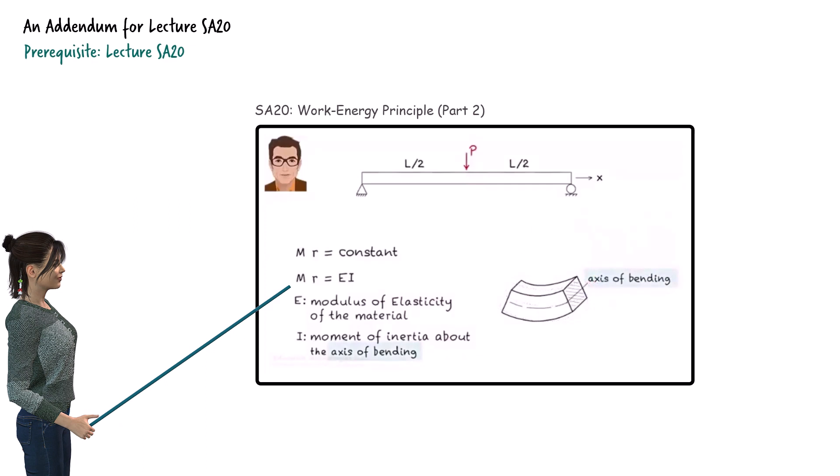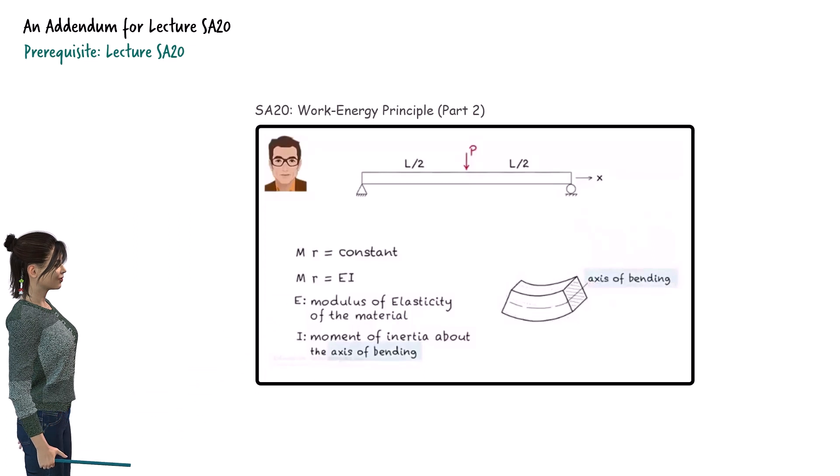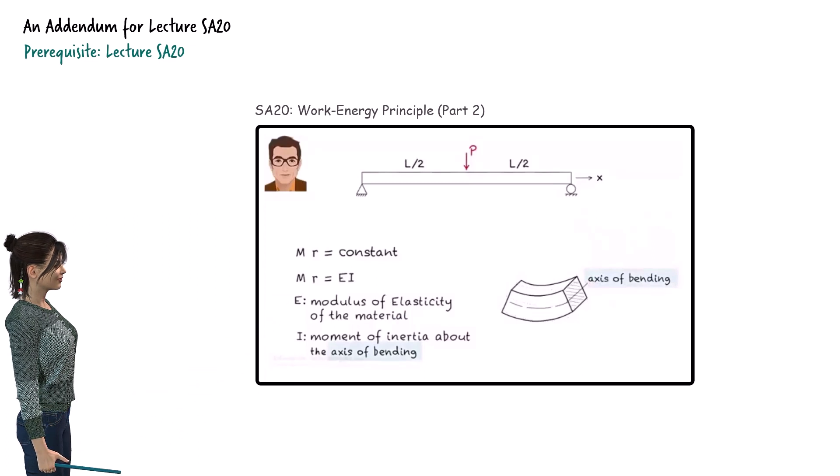This equation states that the product of the bending moment in the beam and its radius of curvature equals the modulus of elasticity of the material times the beam's moment of inertia. In that lecture, the equation was presented without a derivation, prompting questions from a few students wanting to know why the relationship holds.